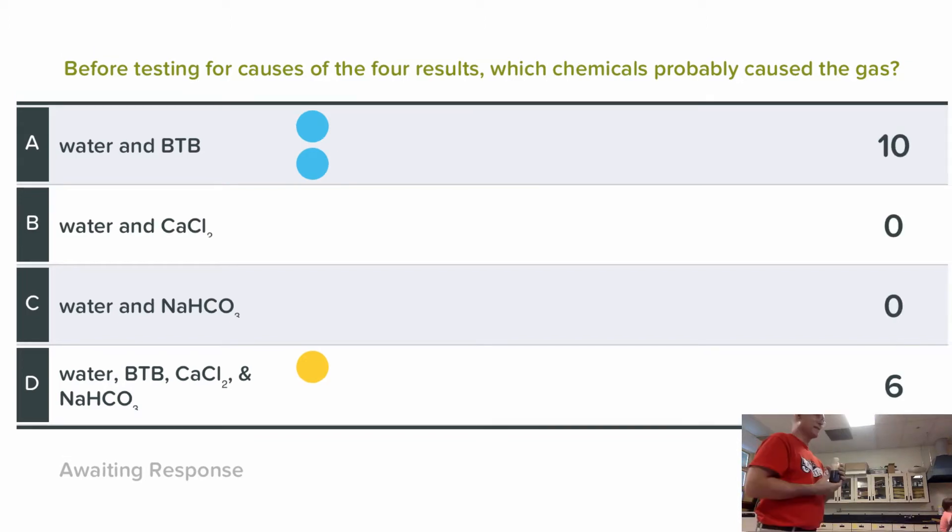I need about one of those answers. I said that this is already mixed with water, bromothymic blue and water, so it can't be which one? It cannot be A. Okay. All right. Way to go, guys. That is correct. It takes all three of them.